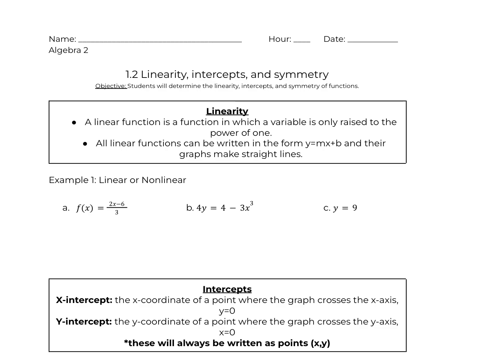So as we look at linearity, what does linearity mean? A linear function is a function in which a variable is only raised to the power of one. So that means we have an x and there's no exponent attached to the x — y equals x. All linear functions can be written in the form y equals mx plus b, and their graphs make straight lines. So m is slope, and b is our y-intercept. Hopefully that's just a refresher and you remember that from Algebra 1.